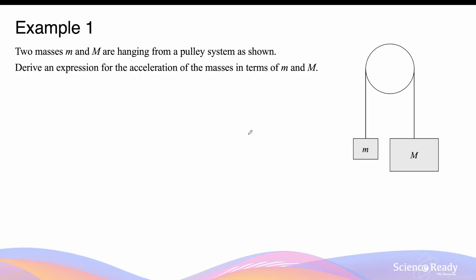Hello everybody. This video is on masses on the pulley system. When masses are hanging from the pulley system, they experience two types of forces: tension force and weight force. The tension force runs along the length of the rope for both masses, and the magnitude of the two tensions are equal because they share the same rope. The masses also experience their own weight forces equal to the mass multiplied by gravity.